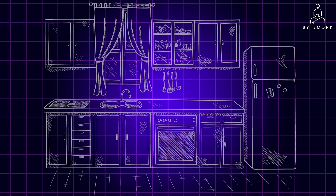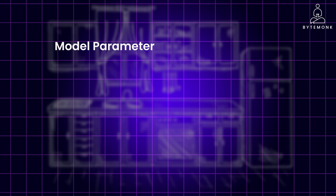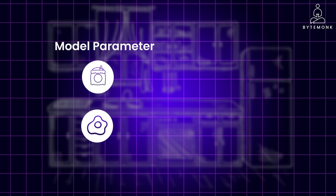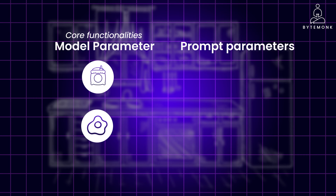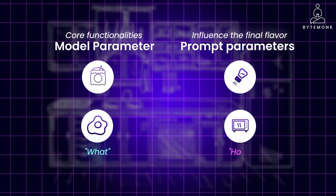If you think of an LLM as a kitchen and the generated text as a dish, then model parameters are like the basic ingredients — such as flour, eggs, etc. — available in the kitchen. They represent the core functionalities of the LLM. Prompt parameters are like the recipe instructions and spices, like adding salt, baking time, etc. They determine how the ingredients are used and influence the final flavor and characteristics of the dish — the text output. In essence, model parameters define the 'what' of an LLM, its core capabilities, while prompt parameters influence the 'how' — the specific way it generates text for a given input.